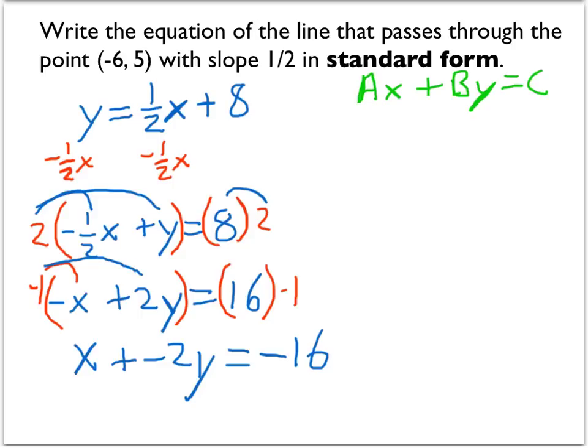Now you might be thinking to yourself, wait a minute, is it okay to have negative numbers? Negative 2, negative 16? That's acceptable in standard form. a, right, the coefficient with x, is supposed to be positive. b can be negative, and c can be negative as well. So here we have x plus negative 2 times y equals negative 16. And now we're done.